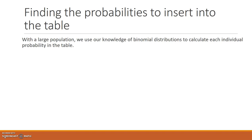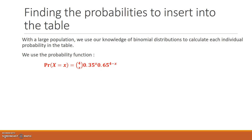In our last example where we had a small population, we used combinations to help us work out all the probabilities. When there's a large population, we use our knowledge of binomial distributions to calculate each individual probability in the table. From our work on binomial probability distributions, you'll remember the binomial formula.